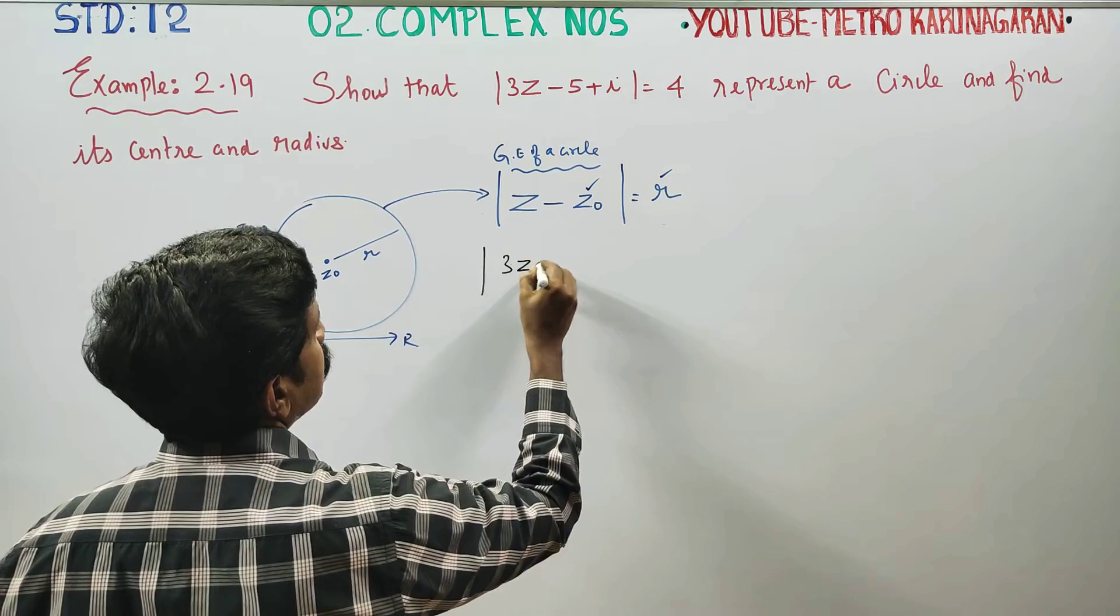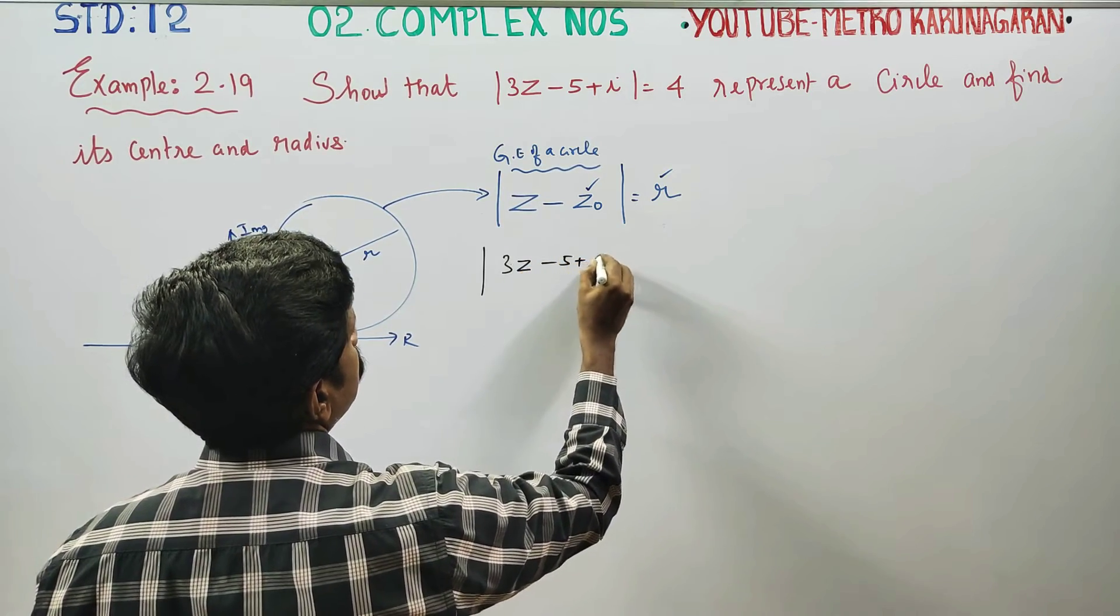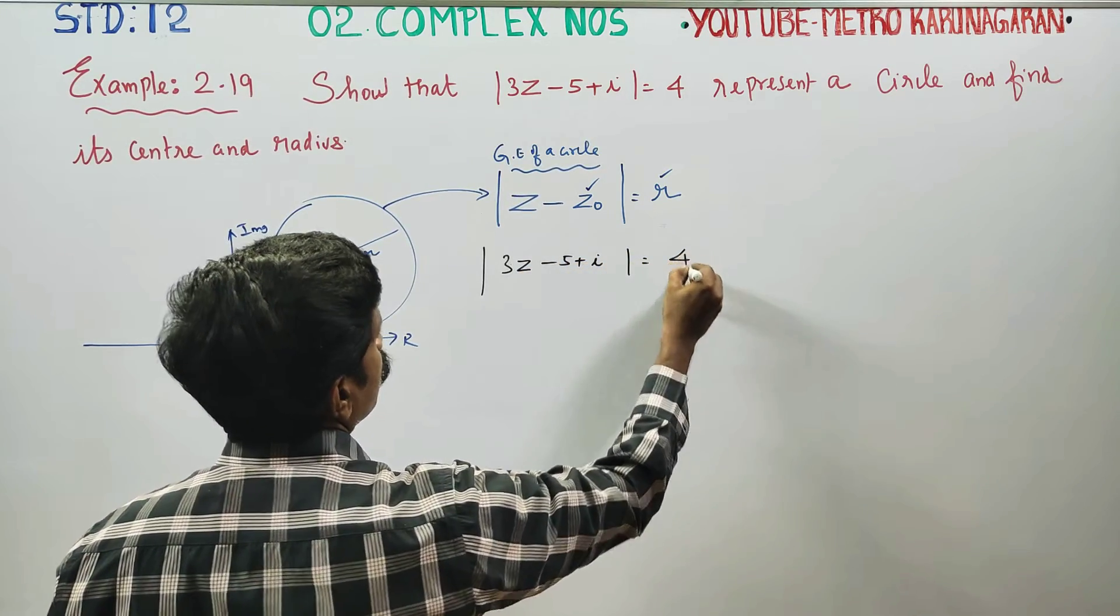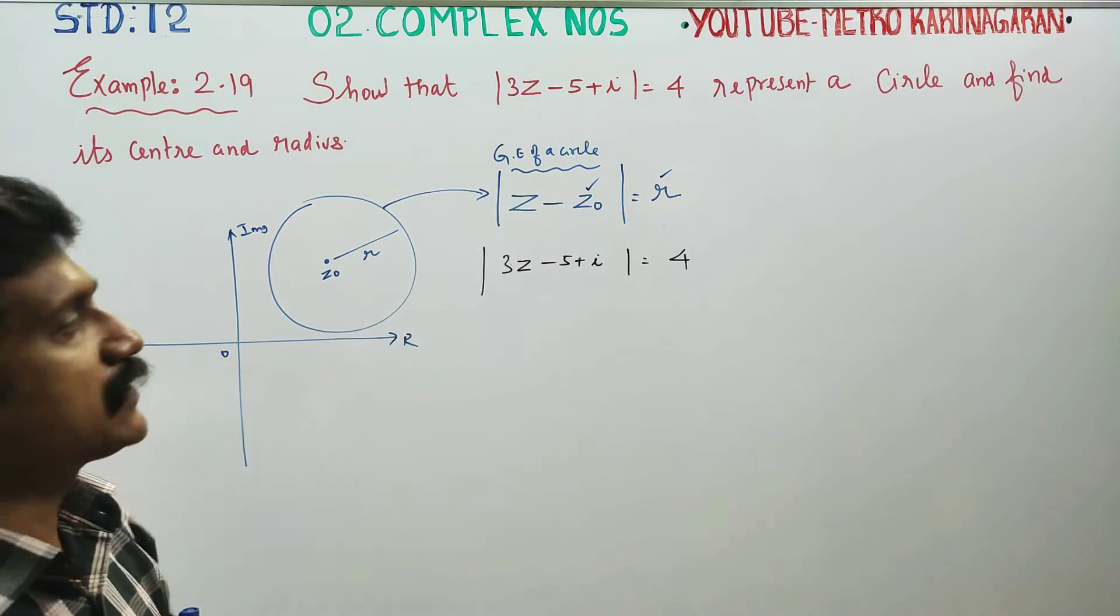|3Z minus 5 plus i| is equal to 4. We can get these numbers.